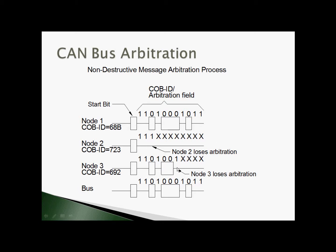The process continues. Node three eventually has a higher numbered packet than node one, at which point it's transmitting a one or passive state while node one is transmitting a zero or dominant state. Node three notices the bus is dominant when it's trying to transmit passive, loses the arbitration, drops off, and waits for the next inter-frame time to try again. The result: node one came in, started its message, and continues it with no loss of time — the highest priority message made it through.